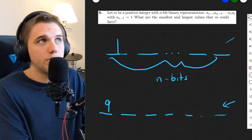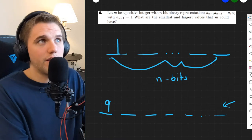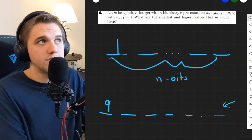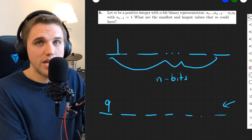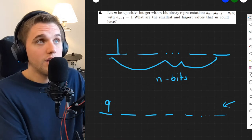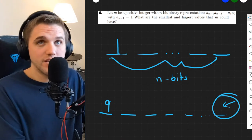But what if we were trying to build the smallest possible binary number that we can have with n bits where the leftmost bit is a 1? Let's talk about base 10 again.